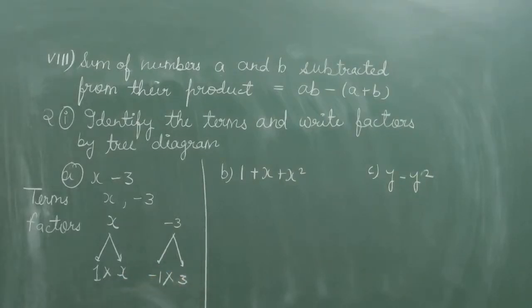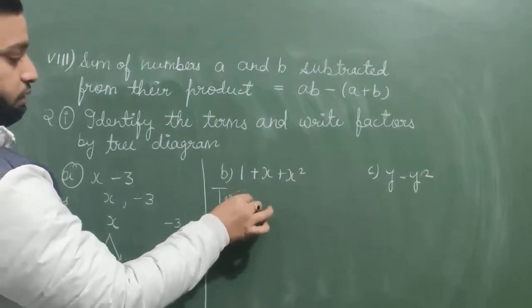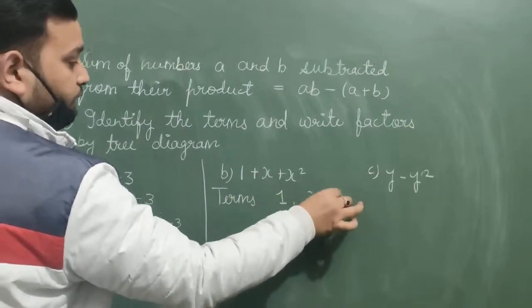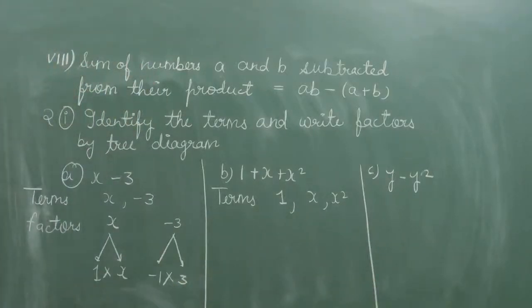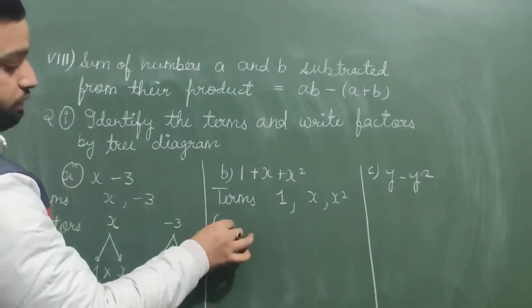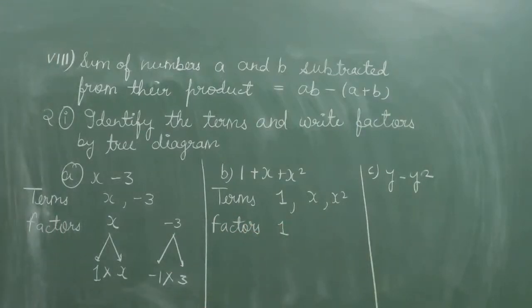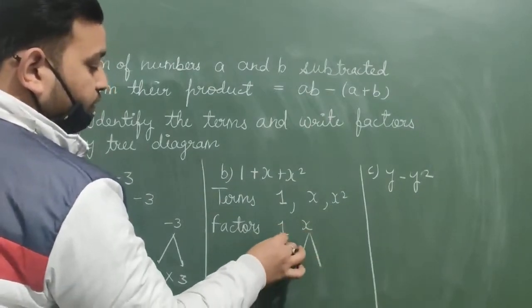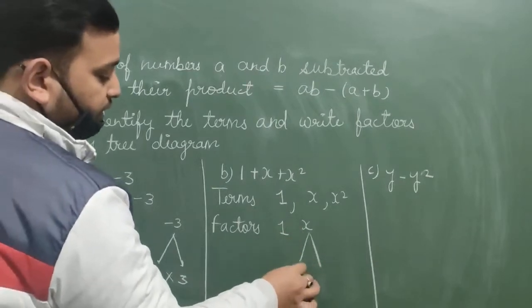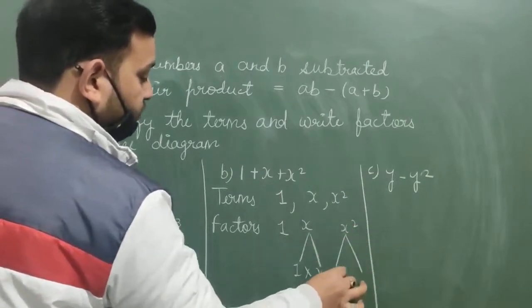Part b: 1 plus x plus x squared. The terms are 1, x, and x squared — three terms. The factors of 1 remain as 1; factors of x are 1 into x; and factors of x squared are x into x.